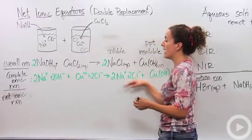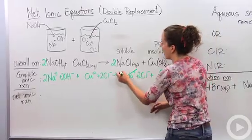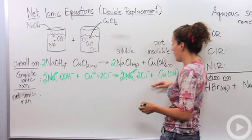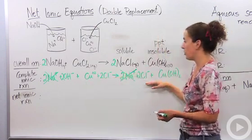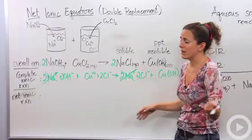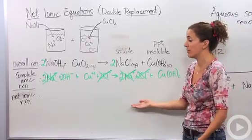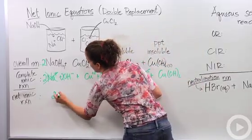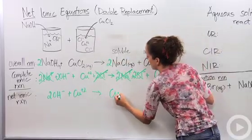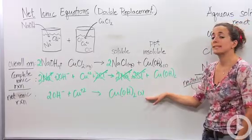There are ions on both sides of the reaction that haven't changed. For example, we have a sodium ion on the left and a sodium ion on the right — that's a spectator, we cross it out. We have two chloride ions on the left and two chloride ions on the right — that's a spectator too. So our leftovers give us the net ionic equation: 2OH⁻ + Cu²⁺ yields Cu(OH)₂ solid. This is what actually is happening within this reaction.